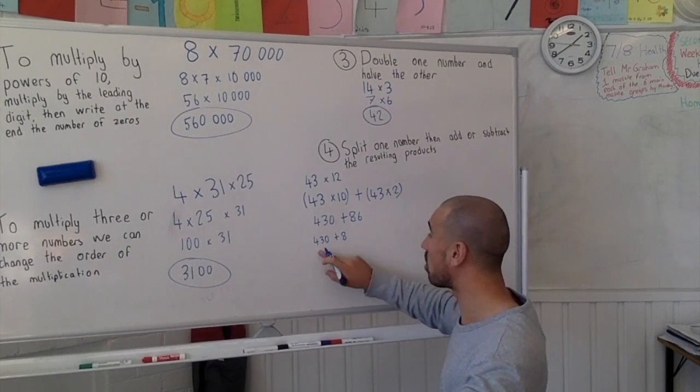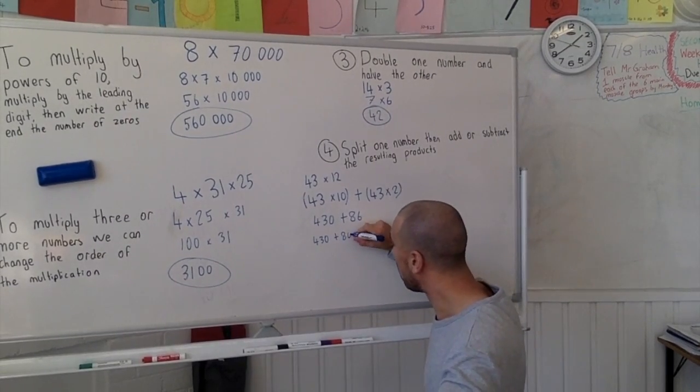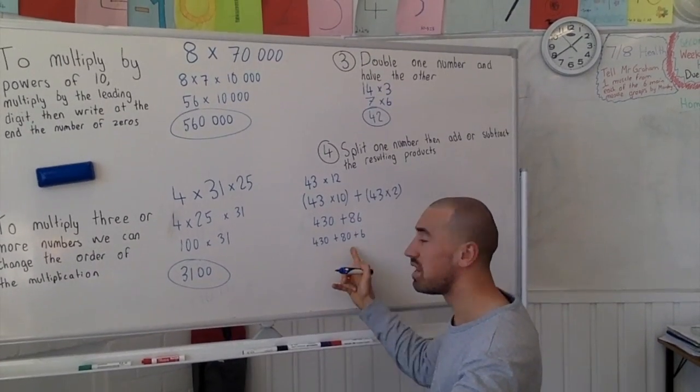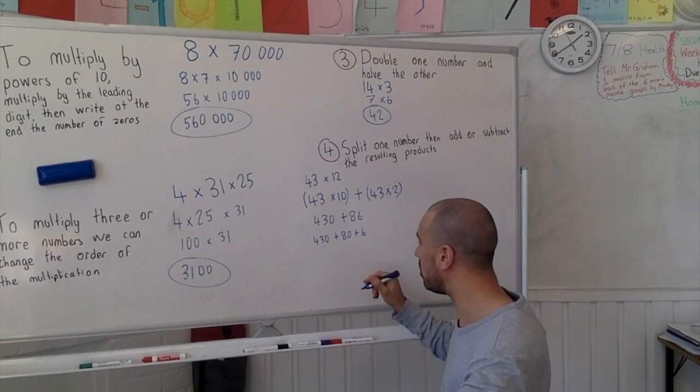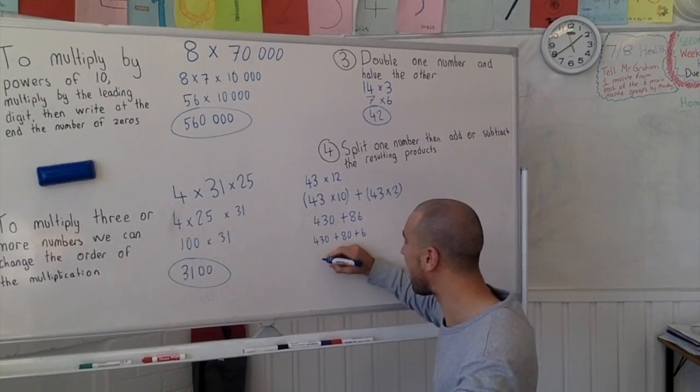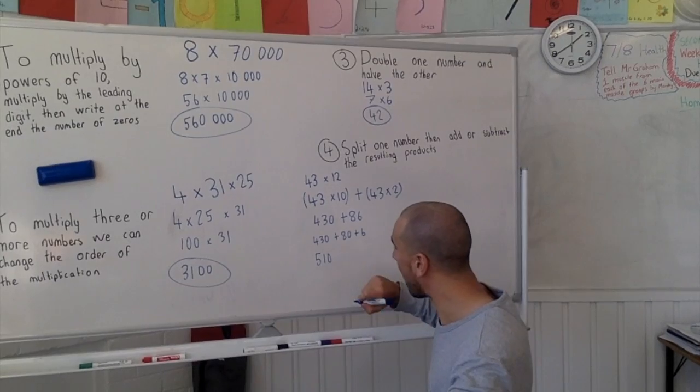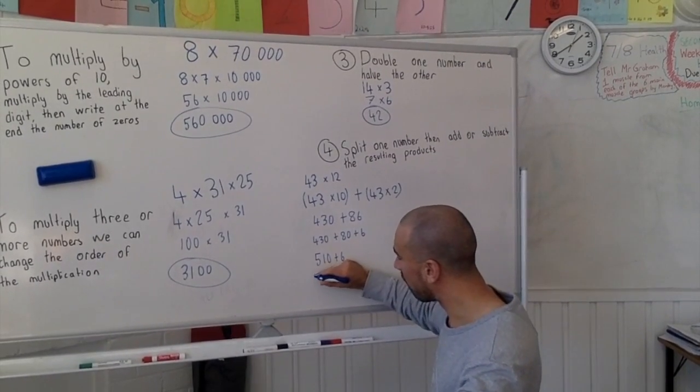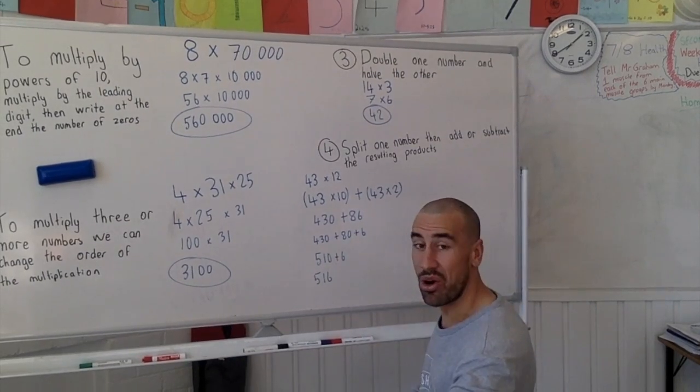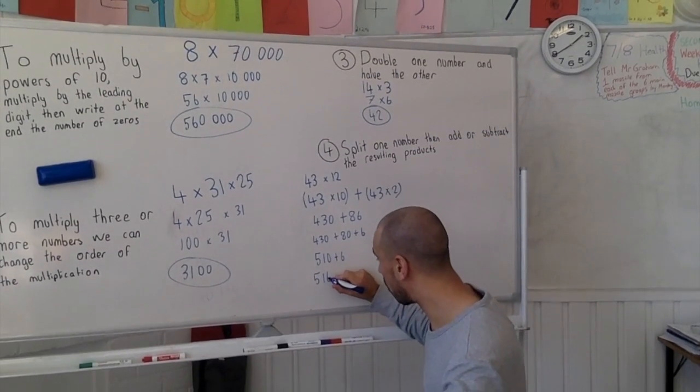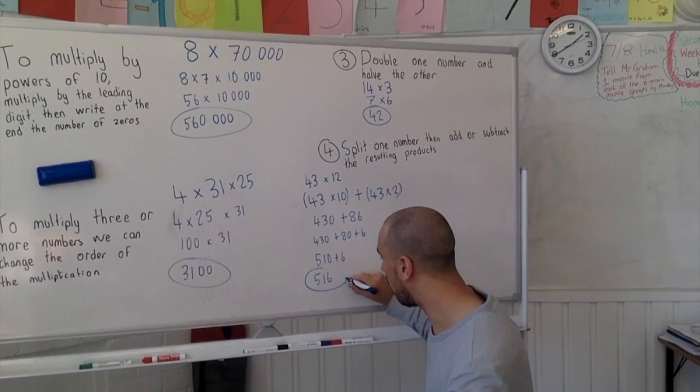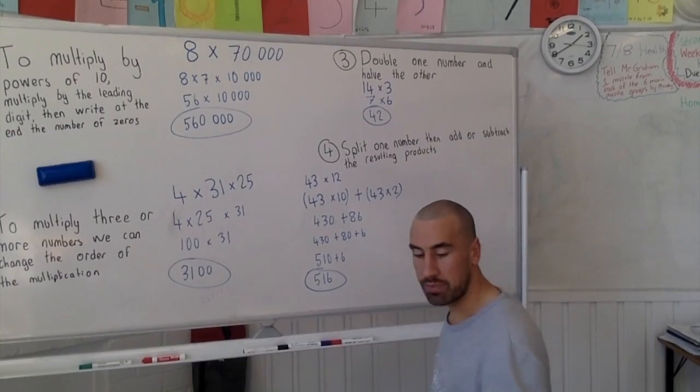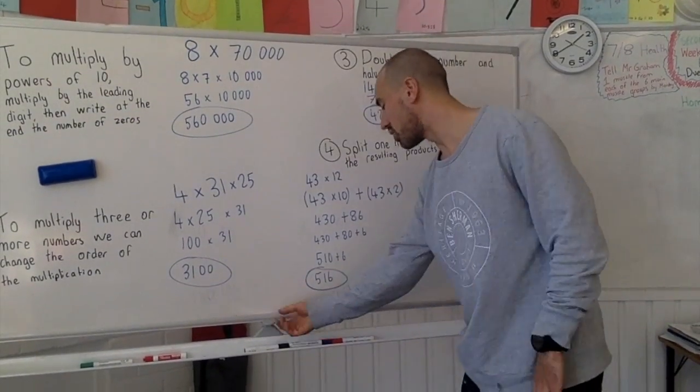430 plus 80 plus 6. And then we could go through and do our addition that way. So 430 plus 80 gives us 510 plus 6, 516. I've really simplified that to show all the working out there. So 516, so that is our fourth strategy for multiplication.